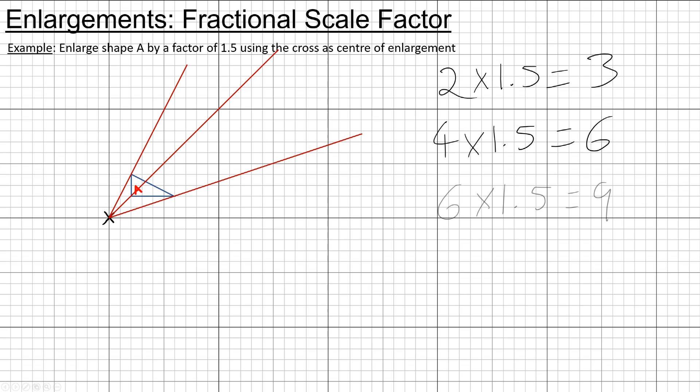To get to this point I need to go across 2 and up 4. So in the enlarged shape I need to go across 2 times 1.5, which is 3, and then up by 4 times 1.5, which is 6.